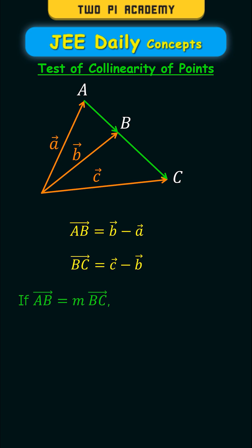Then in that case, if vector AB is a scalar multiple of vector BC, then ABC are said to be collinear.